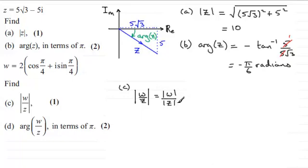And the mod of w, well this is always the value in the front here. So that's 2. And we've got the mod of z. We found out that it was 10. So 2 tenths, 0.2 as a decimal, or it reduces down to 1 fifth.